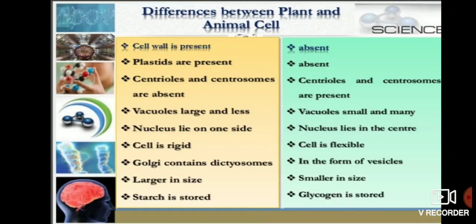Third difference: centrioles and centrosomes are absent in plant cells but present in animal cells. Centrioles and centrosomes are present in animal cells and absent in plant cells.